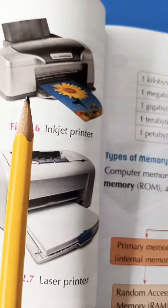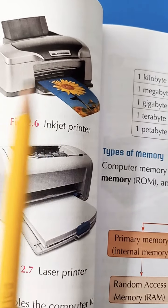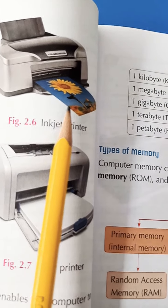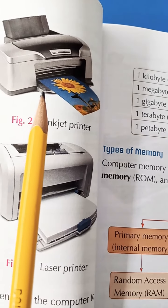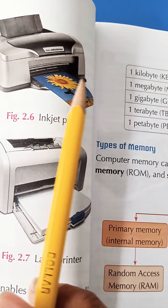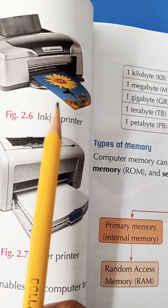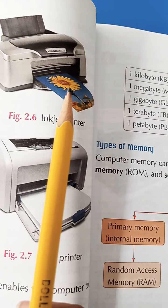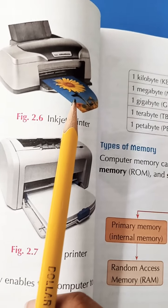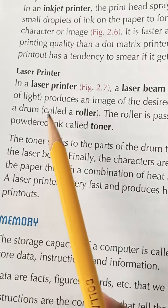Now, this is inkjet printer. In this printer, print head sprays small droplets of ink on the paper on the desired object. We need to spray it. They will be small droplets in our desired image. It will be fast and better printing quality. But if the paper is wet, we will have a problem with the printer.